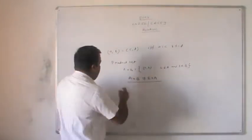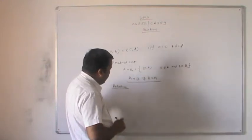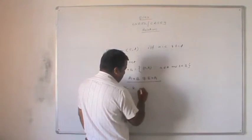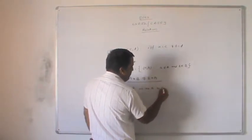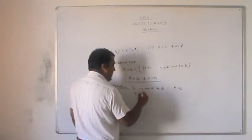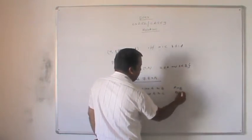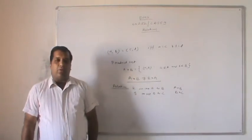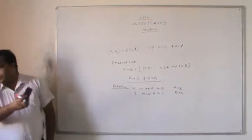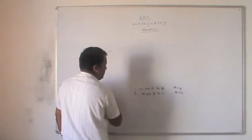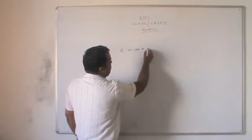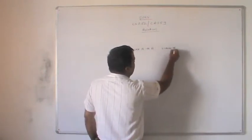Next we can discuss about the relation. We say that relation R from set A to set B can be represented in the form of A cross B. We can also take another relation on set B to C, represented as B cross C. A relation R on set A to B is a subset of A cross B.